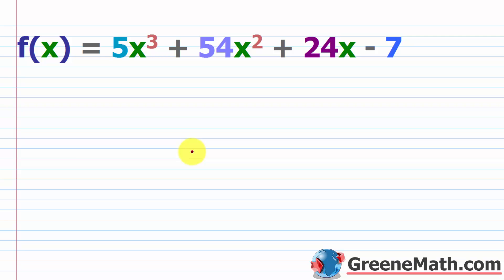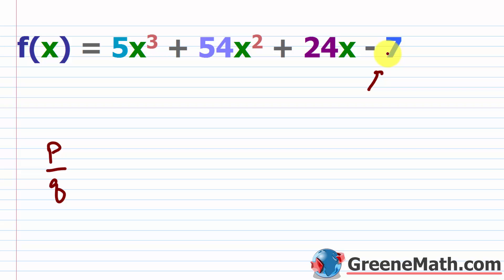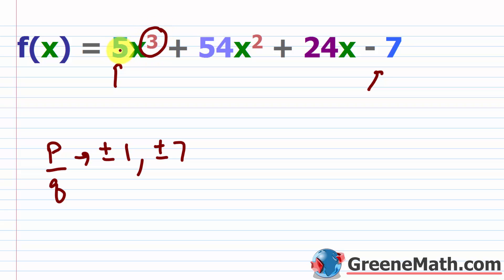Let's look at two more examples, just listing the possible rational zeros without testing them. For f(x) = 5x³ + 54x² + 24x − 7: p comes from factors of the constant term −7, so p = ±1, ±7. q comes from factors of the leading coefficient 5, so q = ±1, ±5.